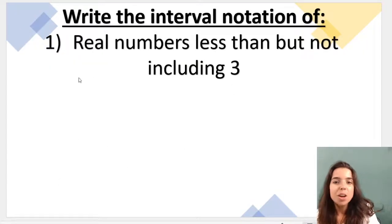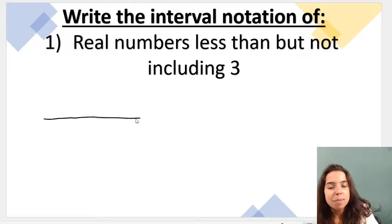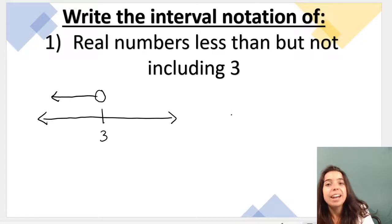Two examples. Real numbers less than, but not including 3. So here's our number line. We've got less than. So here's 3. As we know, if we go this way, if we go to the left, that's going to be less than, but not including. So our dot needs to be open. We're going to have an arrow that goes like that. So we've got less than, but not including 3.